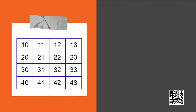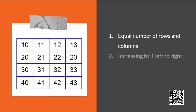Here is the grid of numbers. Observe the grid. Can we say something about this arrangement? Can we say something about the numbers in the grid? Look for some patterns. This is a square table. It has 4 rows and 4 columns, and the numbers are increasing by 1 from left to right. Also, the numbers are increasing by 10 from top to bottom.